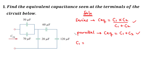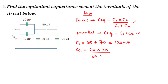First, the parallel combination of 50 and 70 microfarads is called C1, which equals 50 plus 70 = 120 microfarads. For the second combination C2, that is 60 in series with 120, so we use the formula: 60 times 120 divided by 60 plus 120, giving 7200 divided by 180.